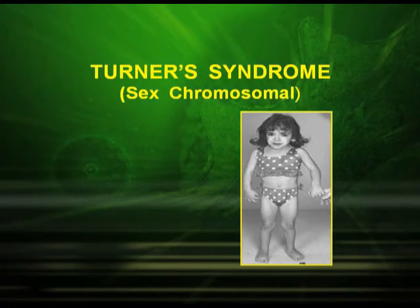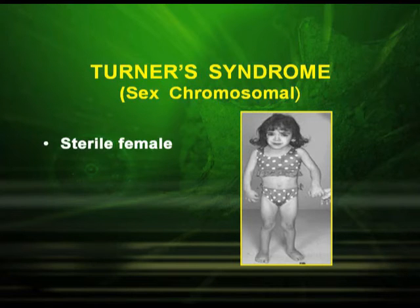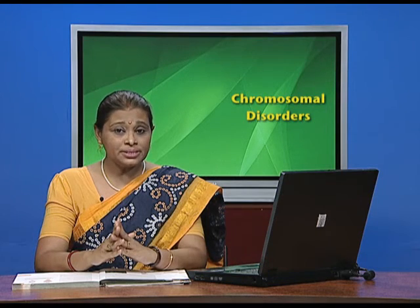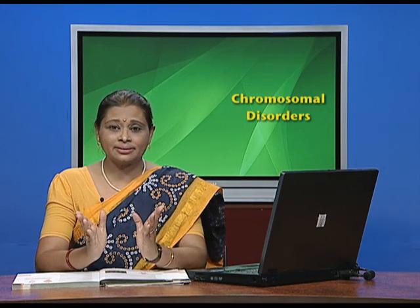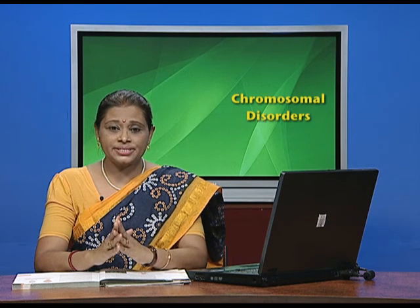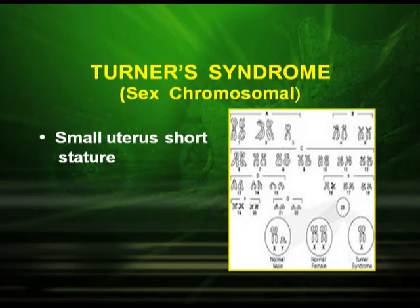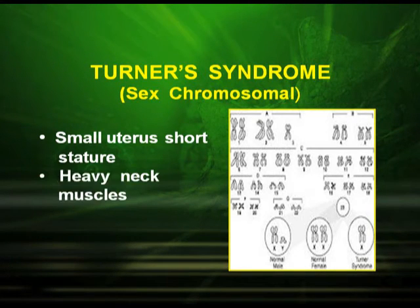The next very important disease is Turner syndrome. What do you observe in the picture — is it a male or female? It is a female, but it is a sterile female. The constitution is 44 + X0, meaning one X chromosome is missing. In this kind of disease, we see underdeveloped ovaries and breasts, small uterus, short stature, and heavy neck muscles.